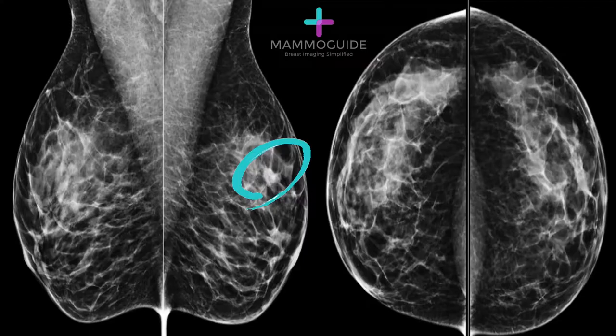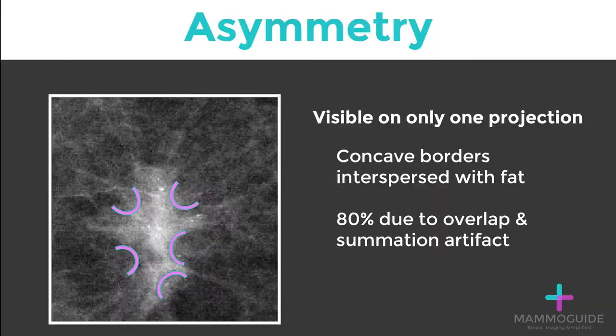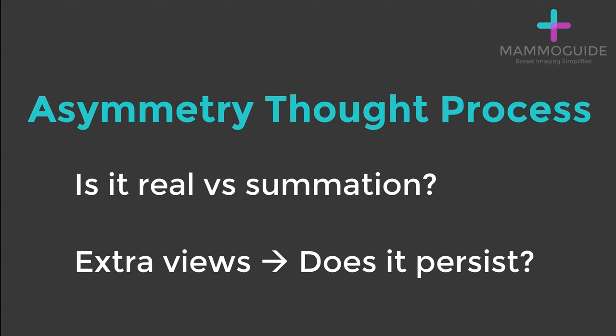On this screening mammogram, there is an asymmetry in the superior left breast on the MLO view. An asymmetry is visible on only one projection, so either the craniocaudal or medial lateral oblique view. It has concave borders that are interspersed with fat, as opposed to the convex borders and defined margins of a mass. Approximately 80% of asymmetries are due to overlap or summation artifact.